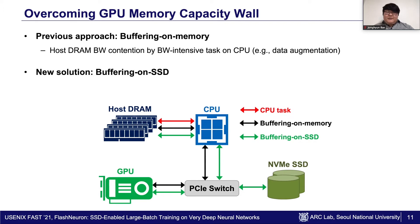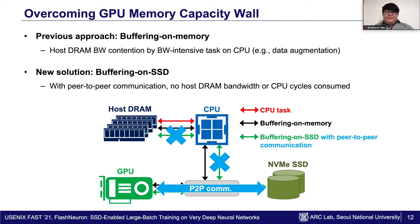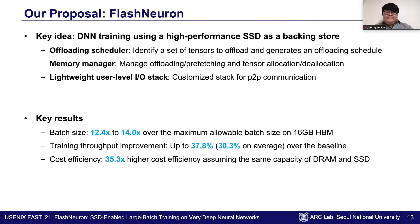Another storage option to avoid the problem is NVMe SSD. However, NVMe SSD has a much smaller read and write bandwidth than DRAM, and it still consumes host DRAM capacity and CPU cycles to process disk IO. To alleviate the limitation of disk IO, P2P communication can be performed without consuming host resources for data movement between GPU and NVMe SSD. Thus, we propose Flash in Neuron, the DNN training system using a high-performance SSD as a backing store.